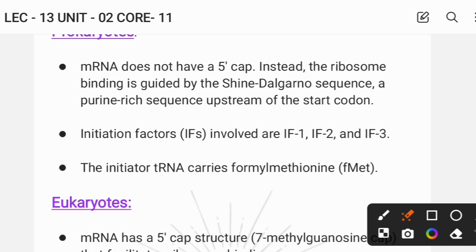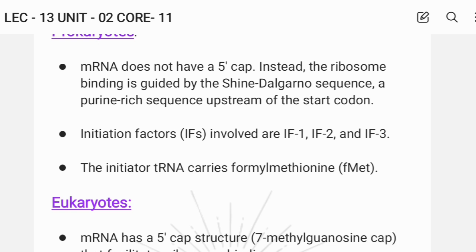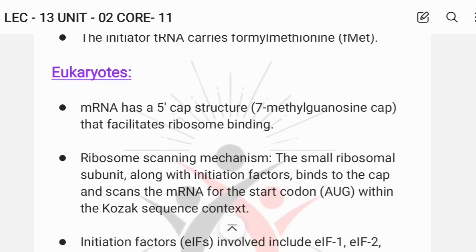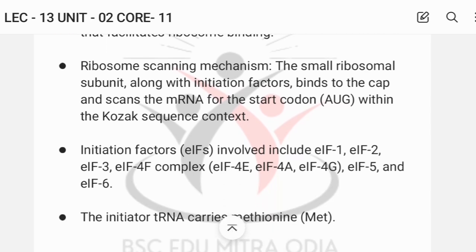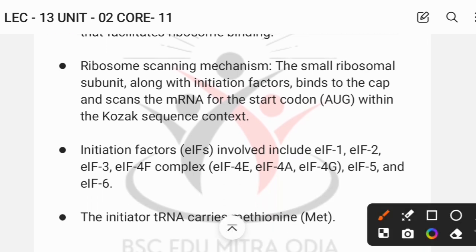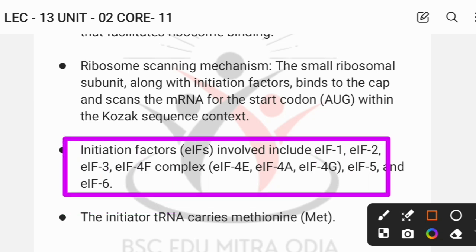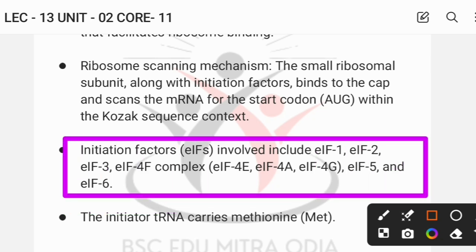But if you compare eukaryotes, then you can find initiation factors 1, 2, 3, 4 complex, then 5 and 6. There are many more initiation factors and proteins involved in eukaryotic translation initiation.